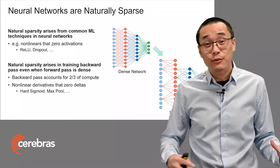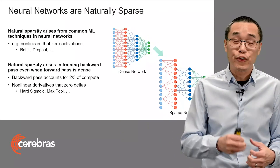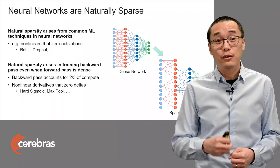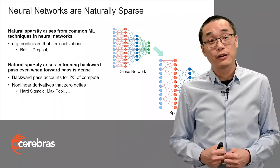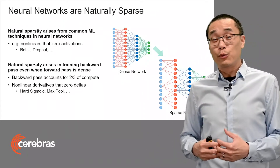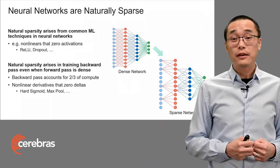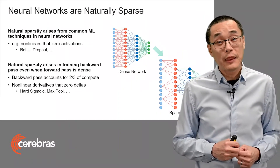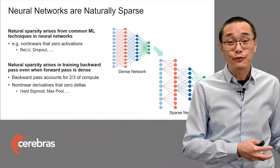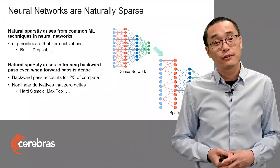Sparsity arises when there are zeros in the computation. The main operation in neural networks is a multiply-accumulate, and when you perform a multiply-accumulate with zero, it doesn't change the result at all. Sparsity can arise in neural networks for a variety of reasons — sometimes from common ML techniques like ReLU or Dropout, and sometimes there's sparsity even when you don't expect it. For example, there are non-linear functions that introduce sparsity in the backward pass when the forward pass is otherwise dense.